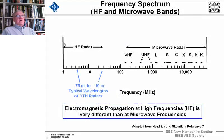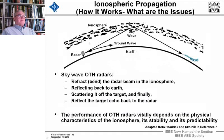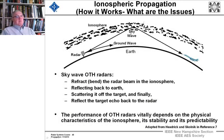I want to first point out the frequency spectrum we're talking about — it's way down low in frequency and high in wavelength. We have this ionosphere up here, and it is a layer of ionized material, mostly electrons, that bends the radar beam. It reflects it back to Earth, scatters it off the target, and finally it's reflected back to the radar.